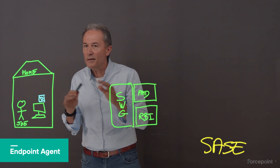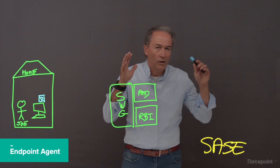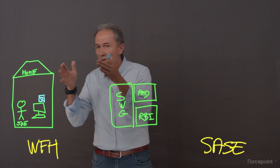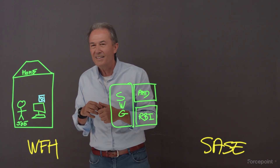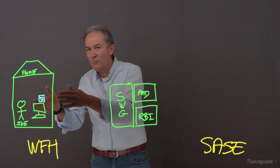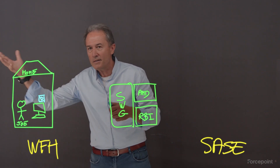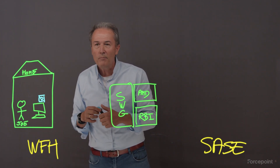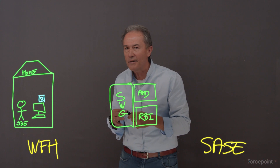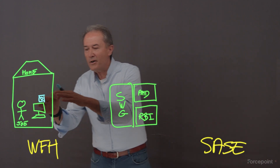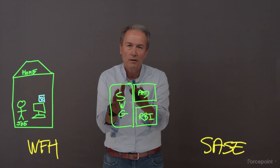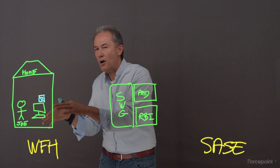That endpoint has to be intelligent — that's actually something we often forget. Joe is on a lousy network at home. He doesn't have a lot of bandwidth; his network is highly constrained. The kids might be playing video games or watching Netflix in the background. So it's very important that the endpoint knows what to send to the secure web gateway and what to drop.